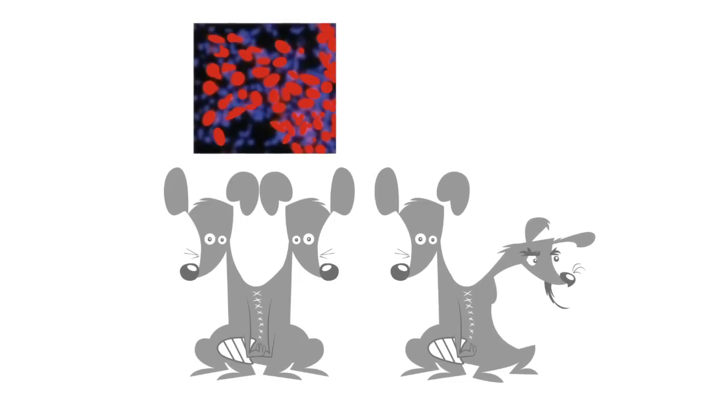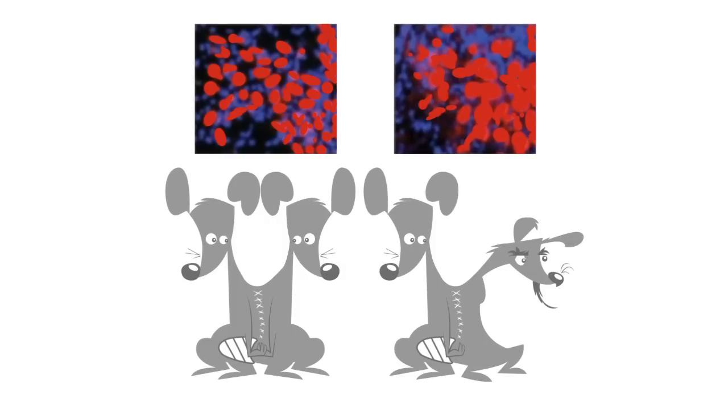The second thing this control experiment shows is that pairing a young mouse with an old mouse does not diminish the young mouse's ability to repair its muscle. So the amount of new red cells is the same.